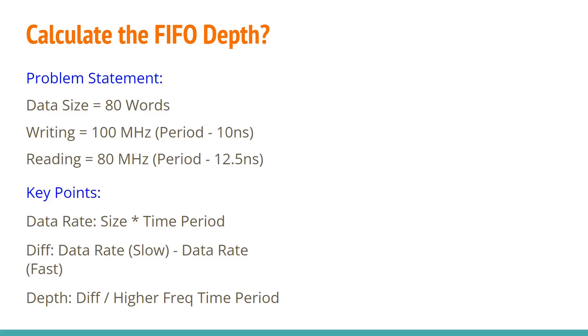Now think about this. The depth will obviously should be the difference in speed between the receiver and the transmitter divided by the higher frequency time period, meaning in that difference, how many words, possibly how many words could the transmitter write? And that should account for your FIFO depth.